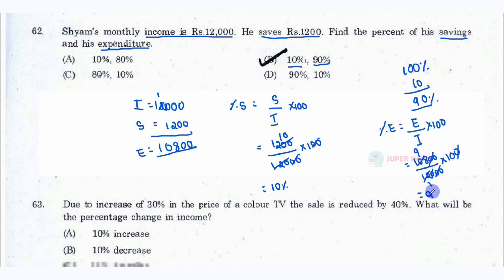So expenditure is 90% and saving is 10%. So total is 100. Option B is the correct answer.